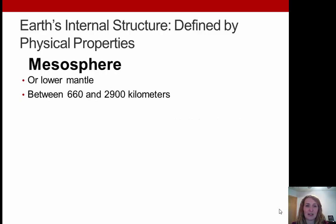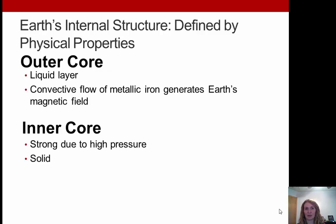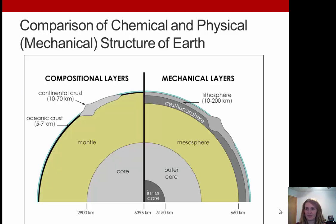Next is the mesosphere, or lower mantle, between 660 and 2,900 kilometers deep. Then we have the core: the outer core is a liquid layer with convective flow of metallic iron-rich materials that generate Earth's magnetic field. The inner core is solid due to high pressures. This gives a great comparison — compositionally Earth has three layers, while mechanically it has five.